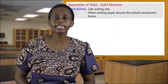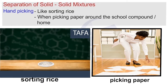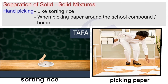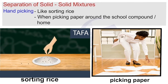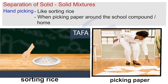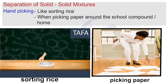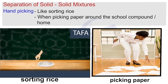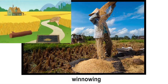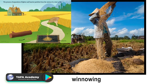Separation of solid-solid mixtures. Closer to home, let us think of hand picking as a method of separation of mixtures — like when sorting rice, when picking paper around the school compound or around the home. We think of separating wheat from chaff. These are activities that we do almost automatically.